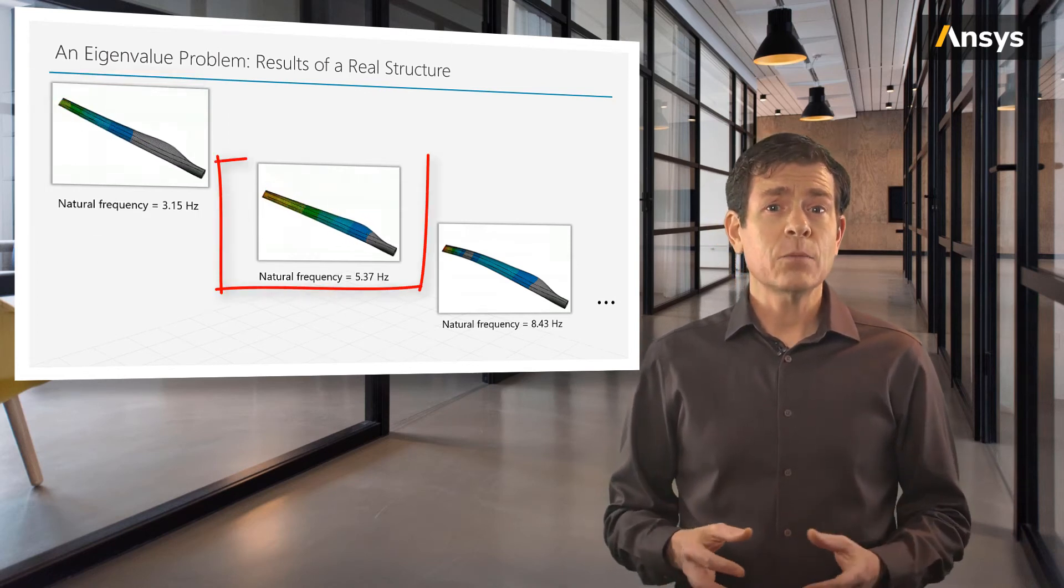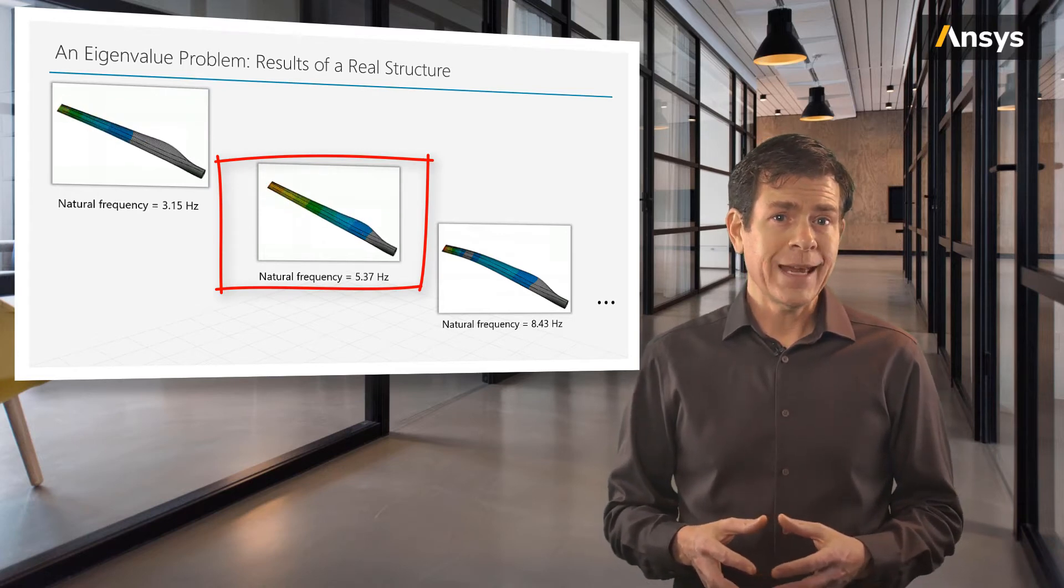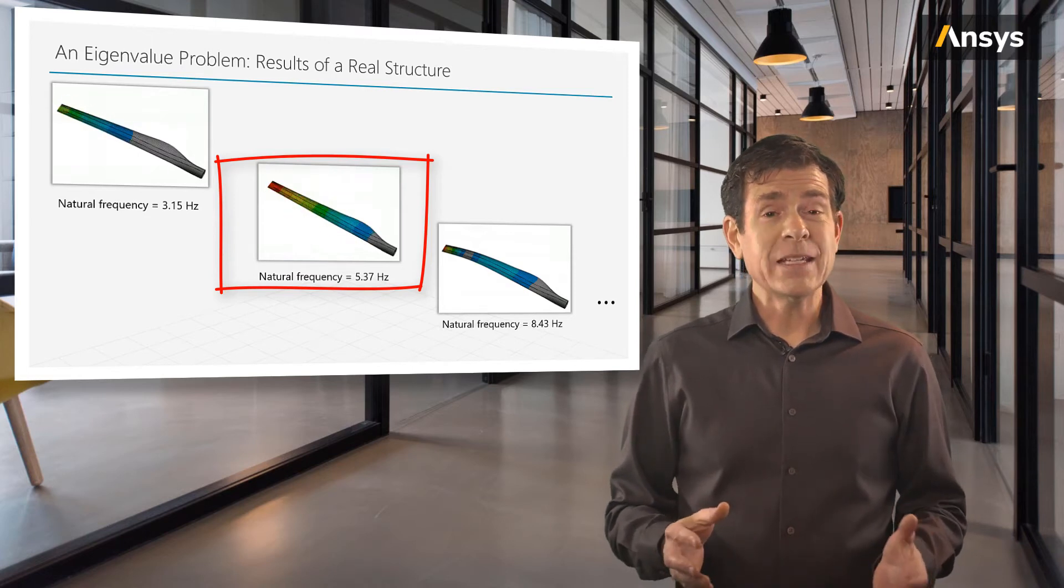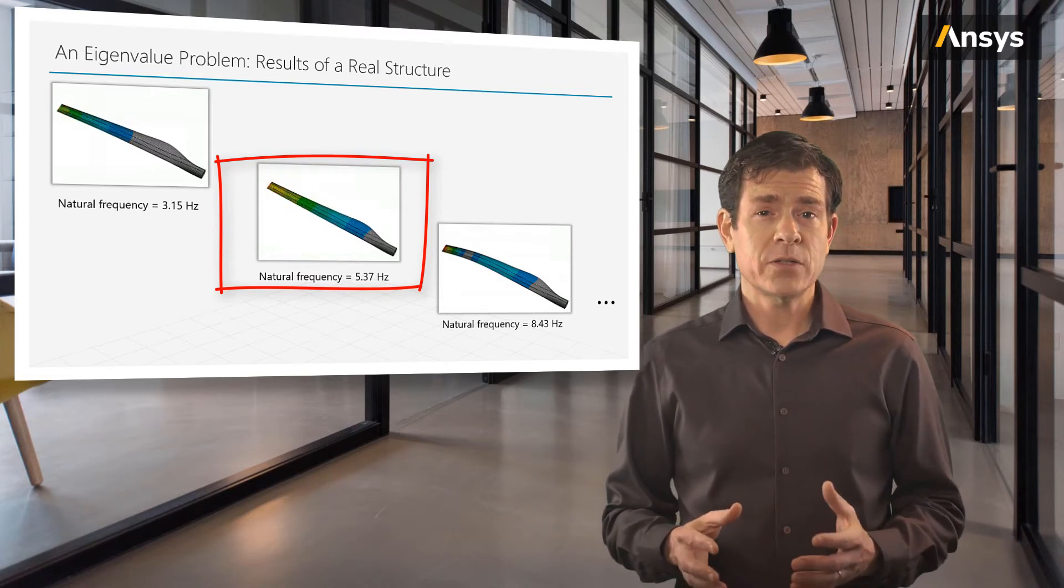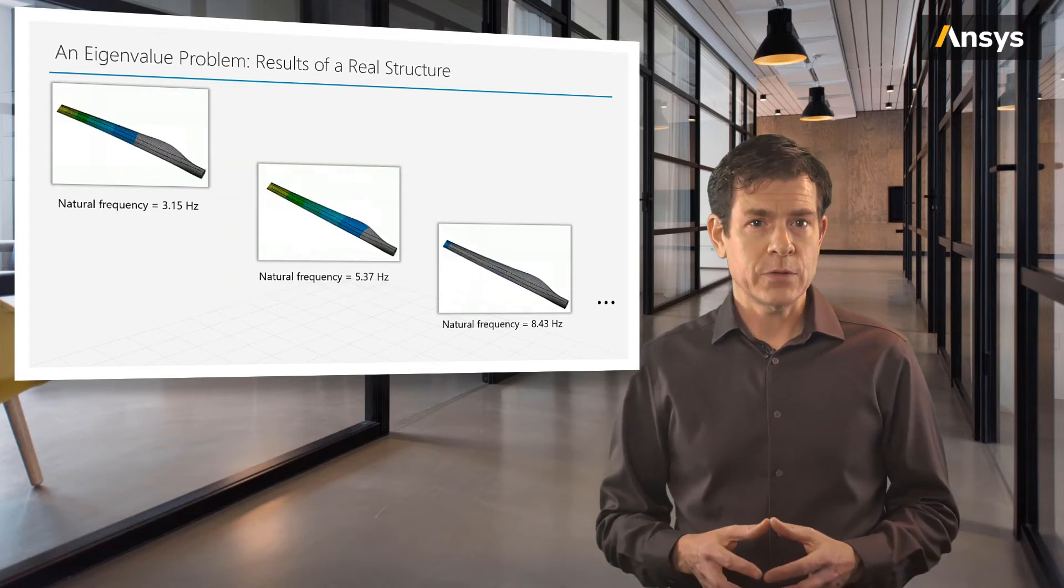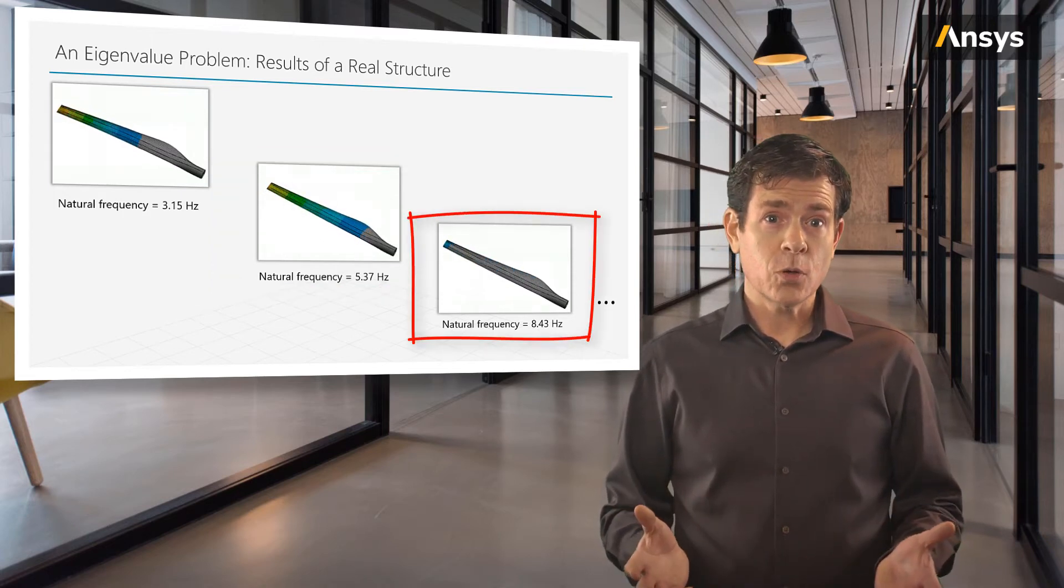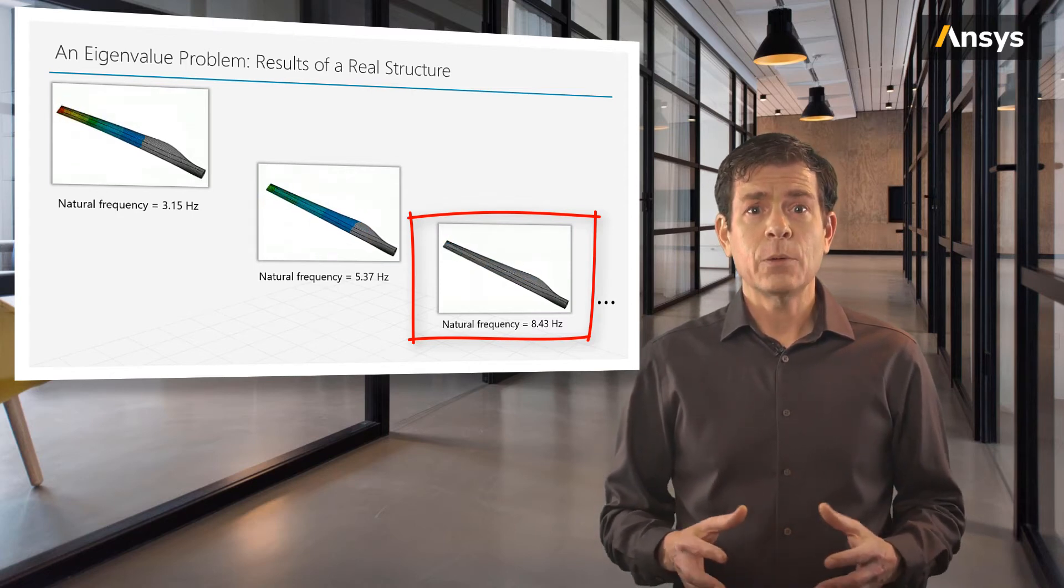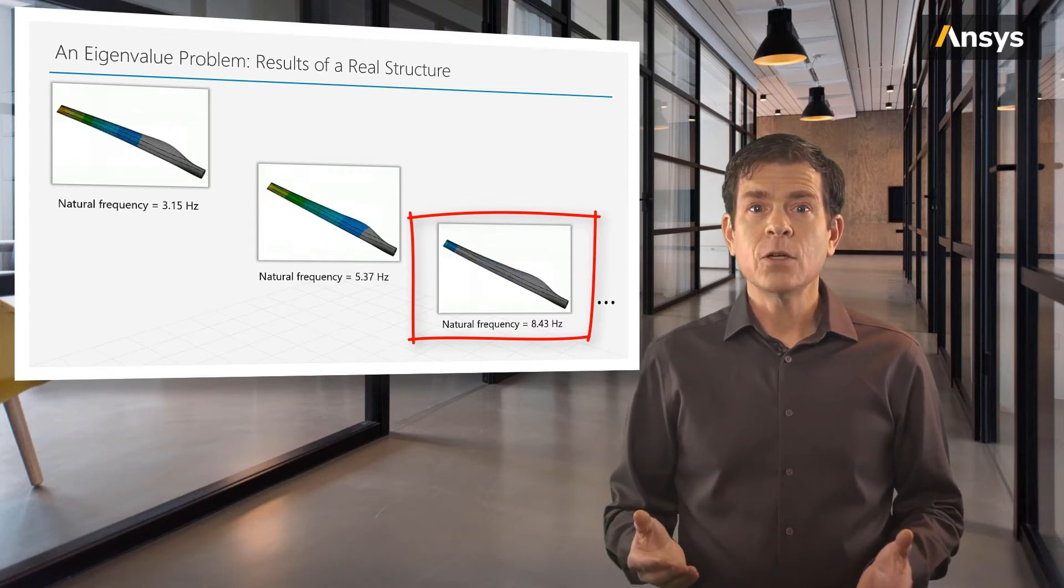Now the second mode is the first edgewise bending mode, and it has a natural frequency of around 5 Hz. The blade is appreciably stiffer in the edgewise direction compared to the normal direction, and hence we have a higher frequency. The third mode is the second flapwise bending mode at around 8 Hz. And we can see that with higher frequencies, we start to get more complex modes of deformation.